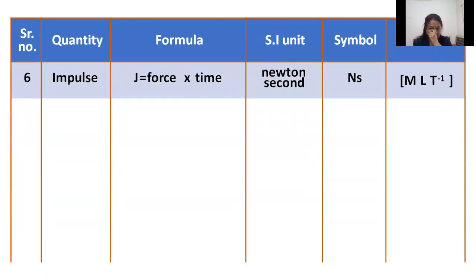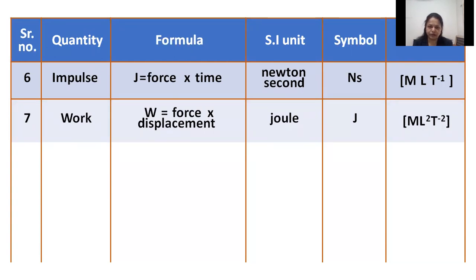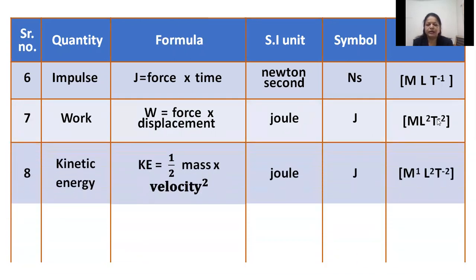For impulse, we just multiply the force dimensions by T to get the dimensions of impulse. For work, it contains the force factor: work equals force into displacement. Just by knowing the dimensions of force, we multiply by displacement and get M, L raised to 2, T raised to minus 2.